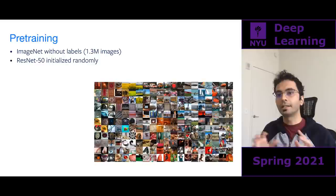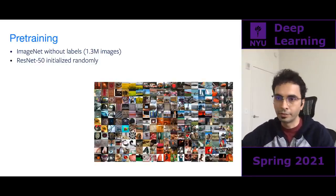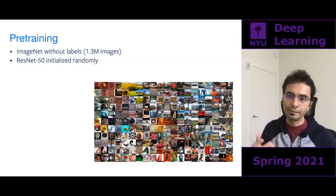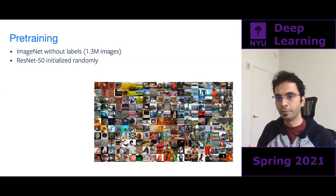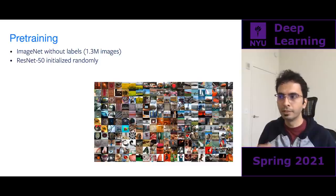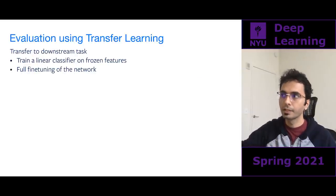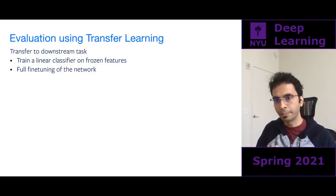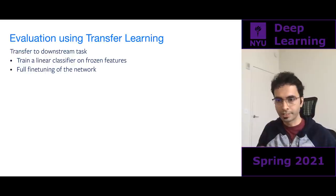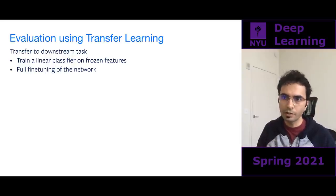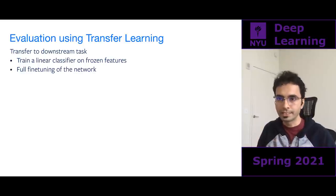Before talking about details, let me give a sense of how we evaluate these methods. For most methods, we pre-train using a self-supervised objective on the ImageNet dataset — we take the subset with 1,000 classes, remove the labels, and get about 1.3 million images without labels. We pre-train a ResNet-50 initialized randomly, then evaluate in two ways: train a linear classifier on top of frozen features to evaluate feature quality, or fully fine-tune the network for a downstream task to see how good of an initialization it provides.